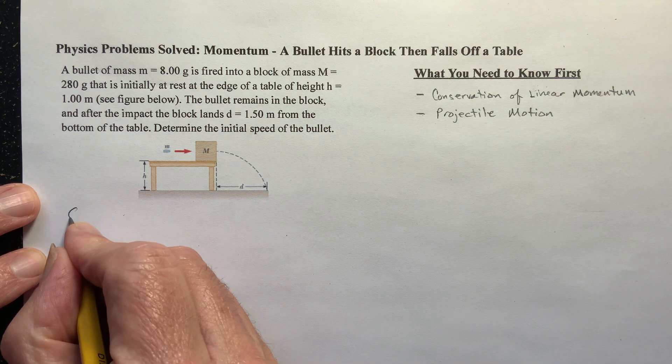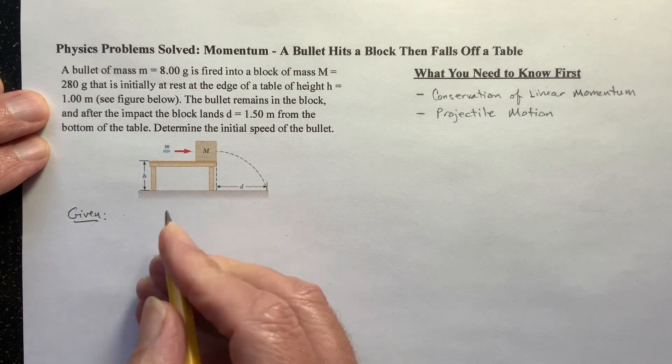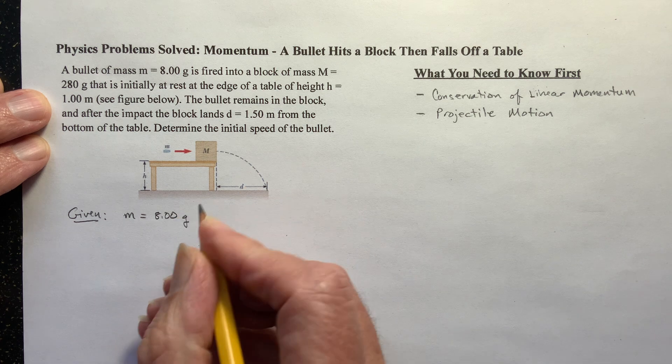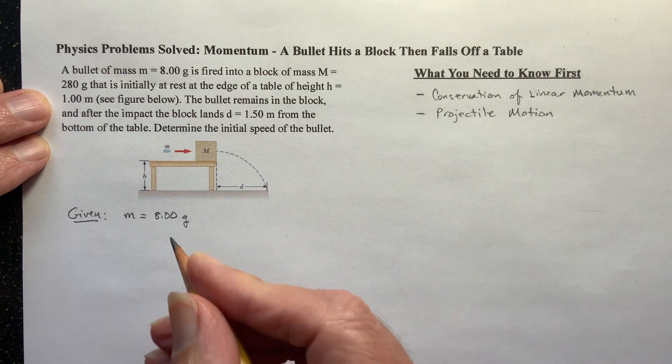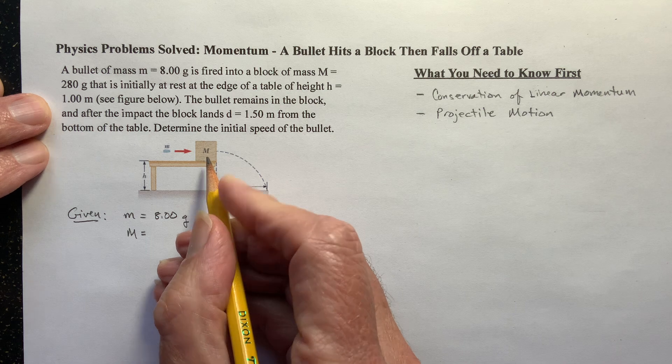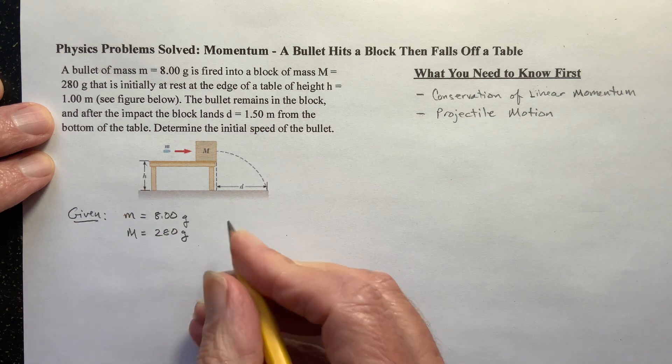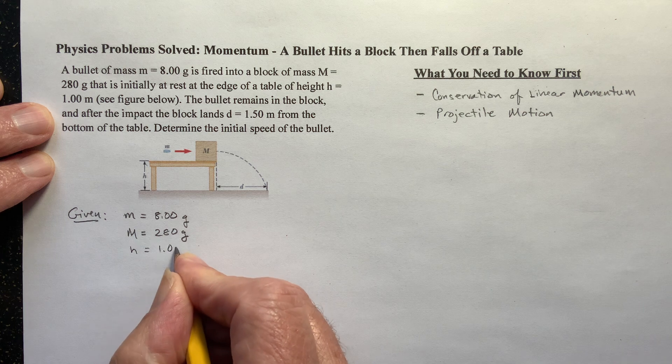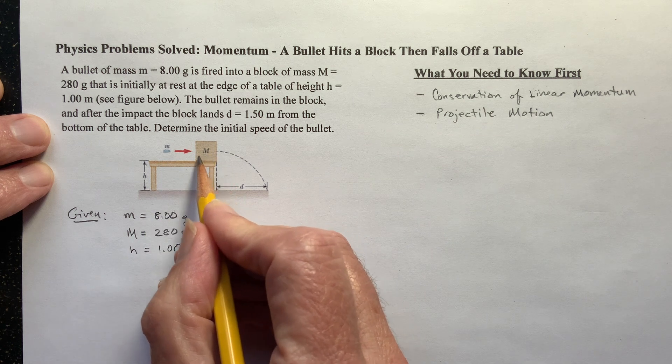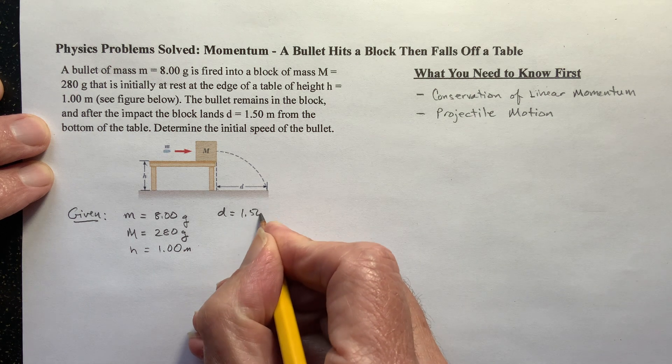So given, I already drew the picture up there. We know that m, little m, that's the mass of the bullet, is equal to 8.00 grams. You may want to change it to kilograms, but actually in this problem that's not going to be necessary. The mass of the big block, capital M, is 280 grams. And the height h is equal to 1.00 meters. And the block after it's hit by the bullet, we assume this is frictionless and it just falls down. And that d here is equal to 1.50 meters.